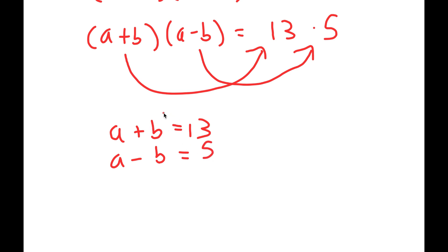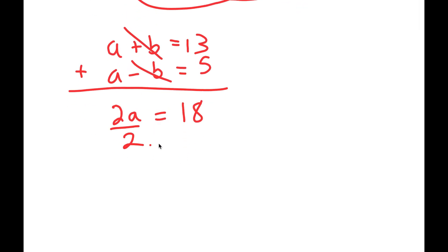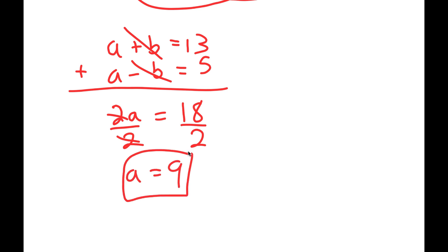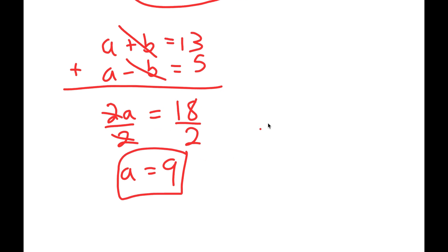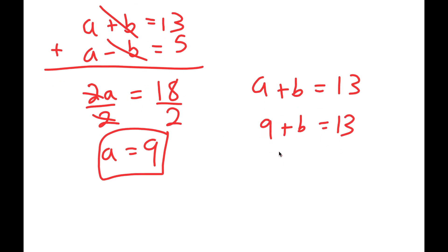Now I have a system of equations, and to solve this I'm going to add them. The b terms cancel out, a plus a is 2a, and 13 plus 5 is 18. So I get 2a equals 18, meaning a is equal to 9. And if a equals 9, and a plus b is equal to 13, then 9 plus b equals 13, meaning b is equal to 4. So a equals 9 and b equals 4.